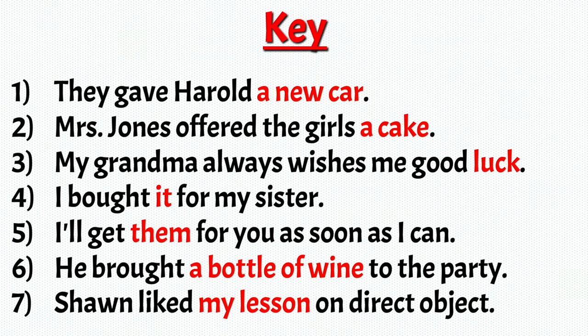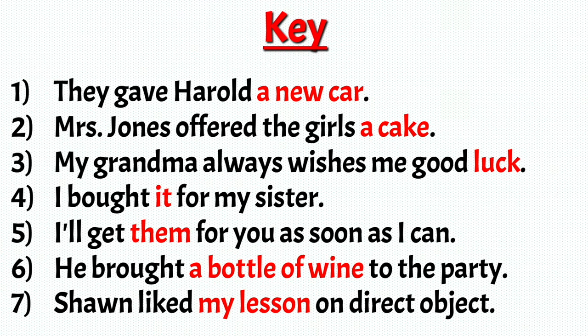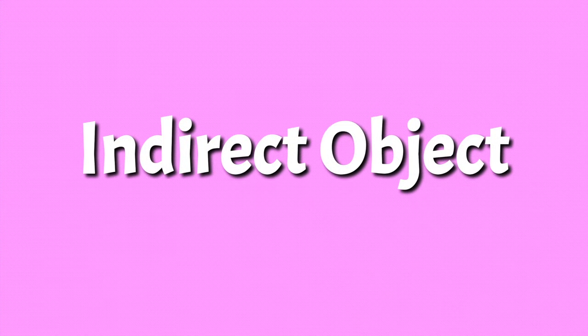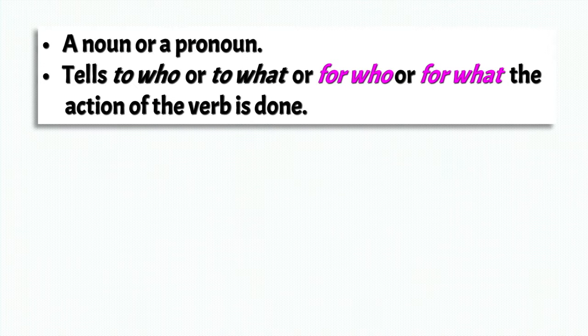So now that we have the direct object, let's look at the indirect object. So it is a pronoun or a noun. It tells to who or to what, or for who or for what, the action of the verb is done.